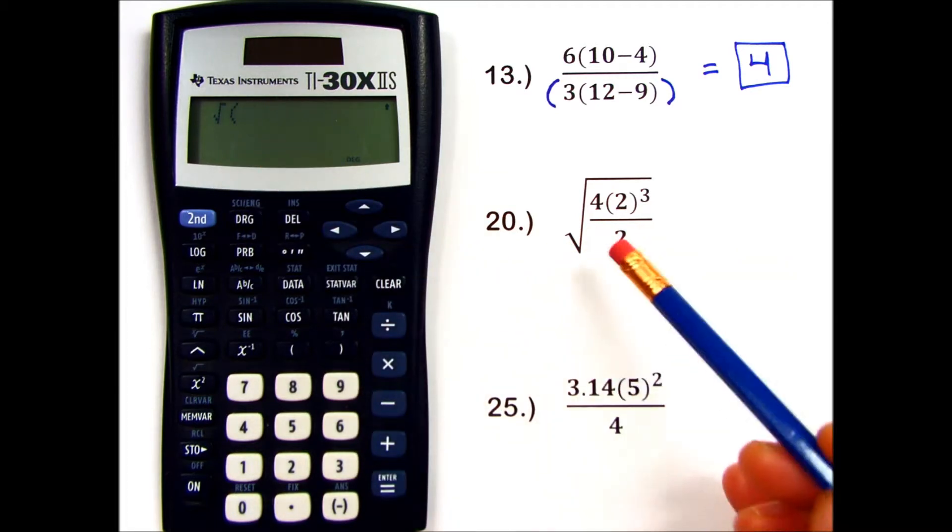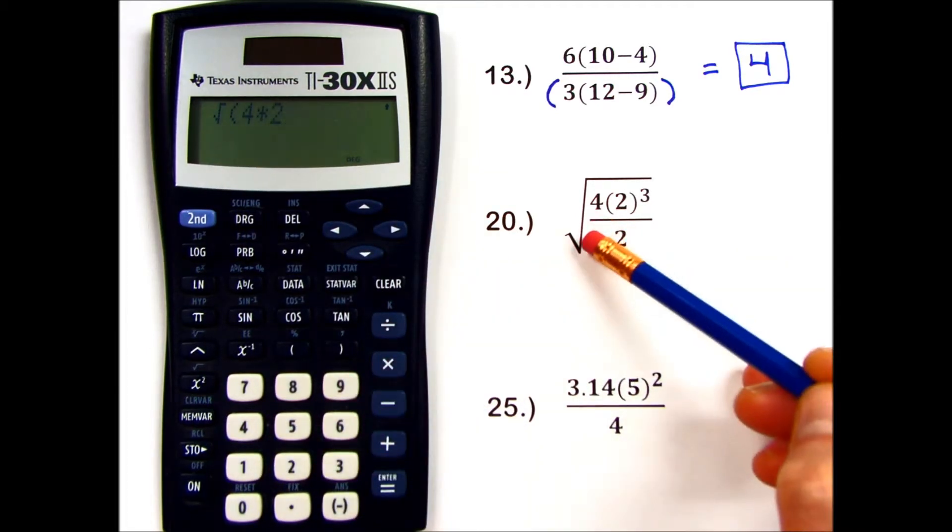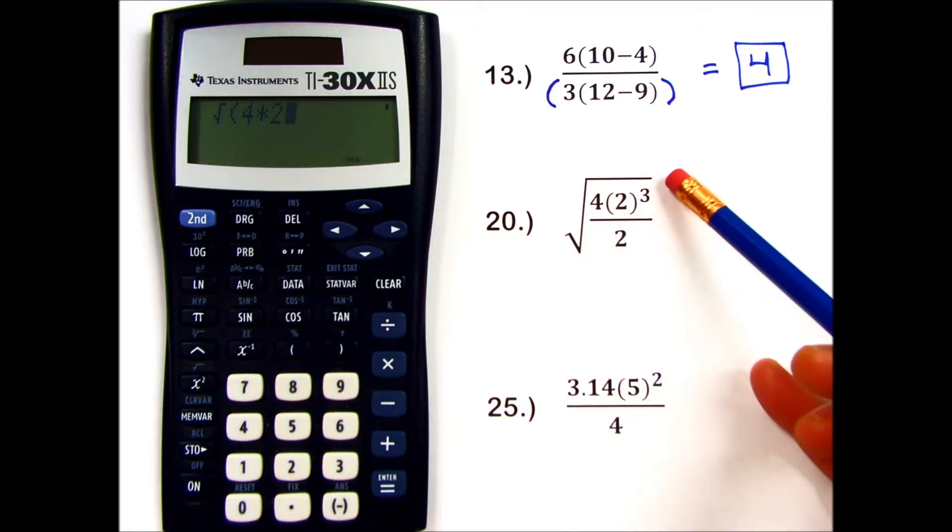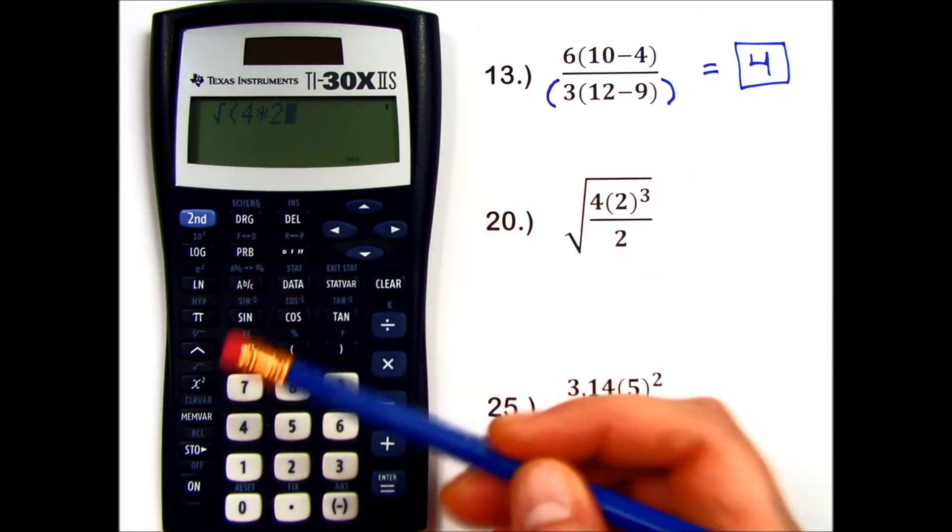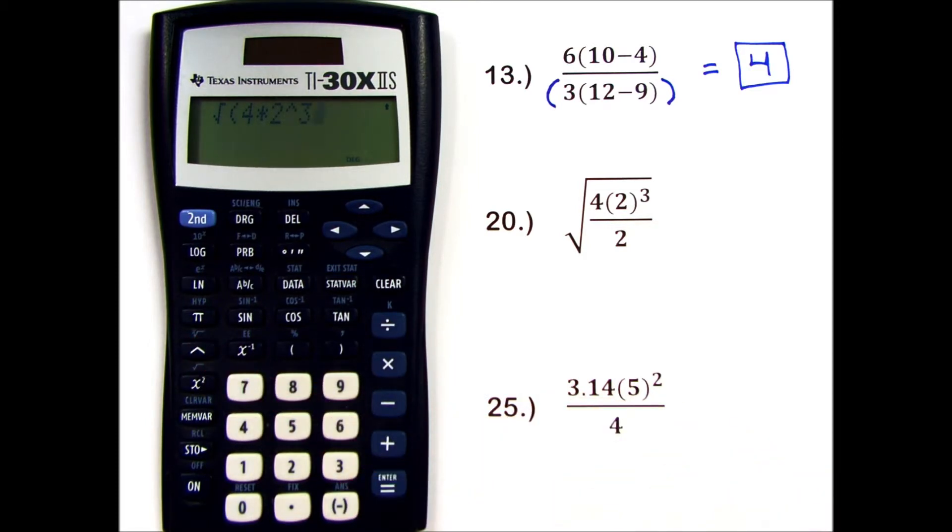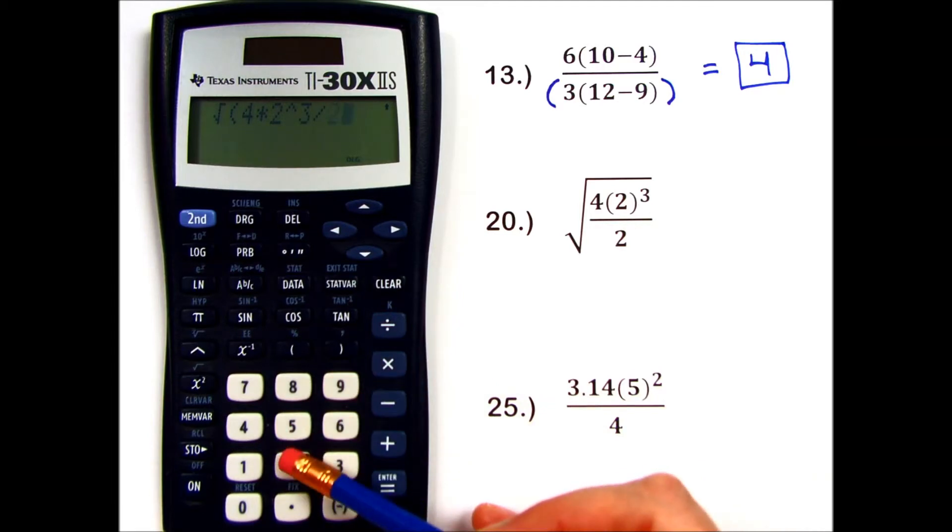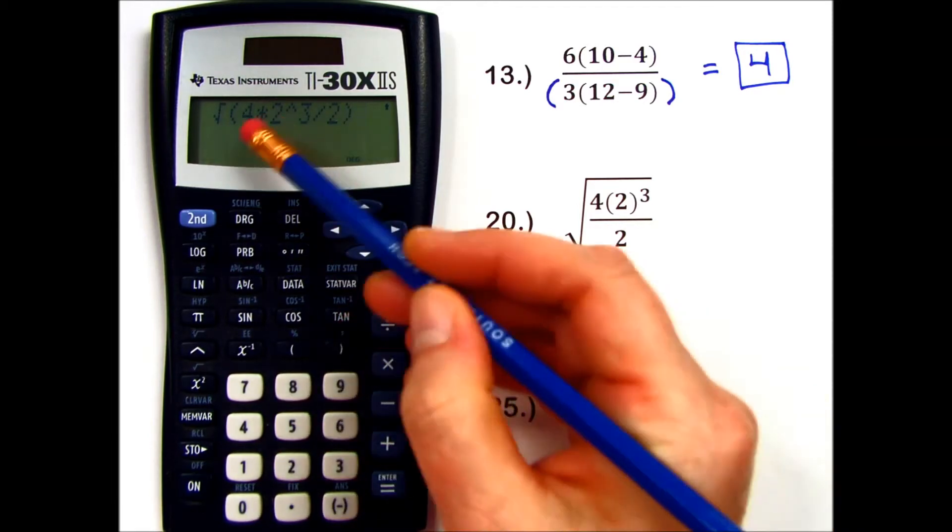The parentheses is ready, and I have 4 times 2. I don't have a cubed key on this calculator, so I'll say 2 to the power of 3, like that. Right away, I will divide by 2,